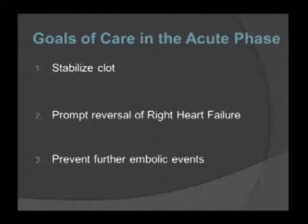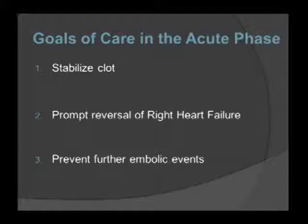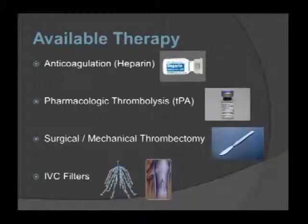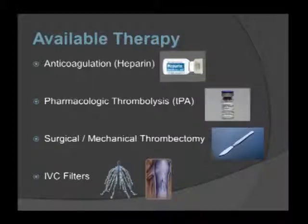The goals of treating PE in the acute phase are threefold: stabilize the clot, promptly reverse right heart failure — since early death in the first few hours is secondary to cardiogenic shock from right heart failure — and prevent further embolic events to address the underlying disease causing longer-term morbidity and mortality.